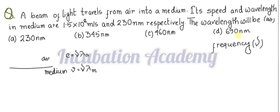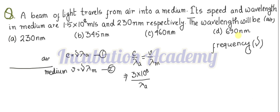The frequency remains the same, but the velocity and wavelength change. If I call these equation 1 and equation 2, and take the ratio, I get: frequency equals c divided by λ_a (from equation 1) and frequency equals v divided by λ_m (from equation 2). So: c divided by λ_a equals v divided by λ_m. Here, c is 3 into 10 to the power 8 meter per second, the velocity in the medium v is 1.5 into 10 to the power 8, and λ_m is 230 nanometer.